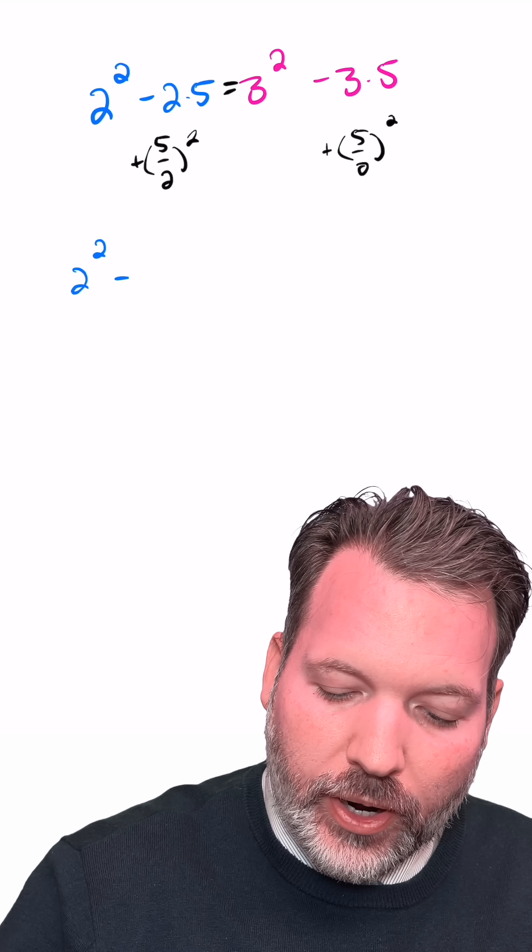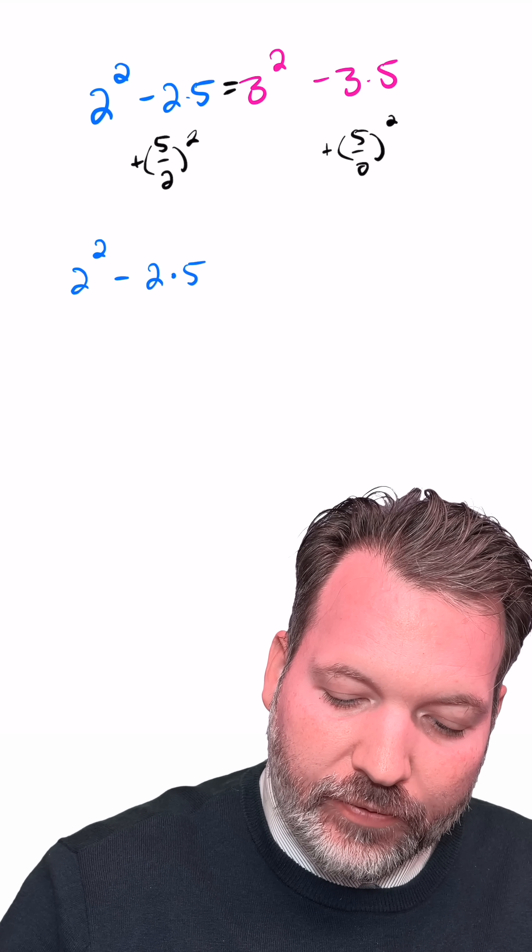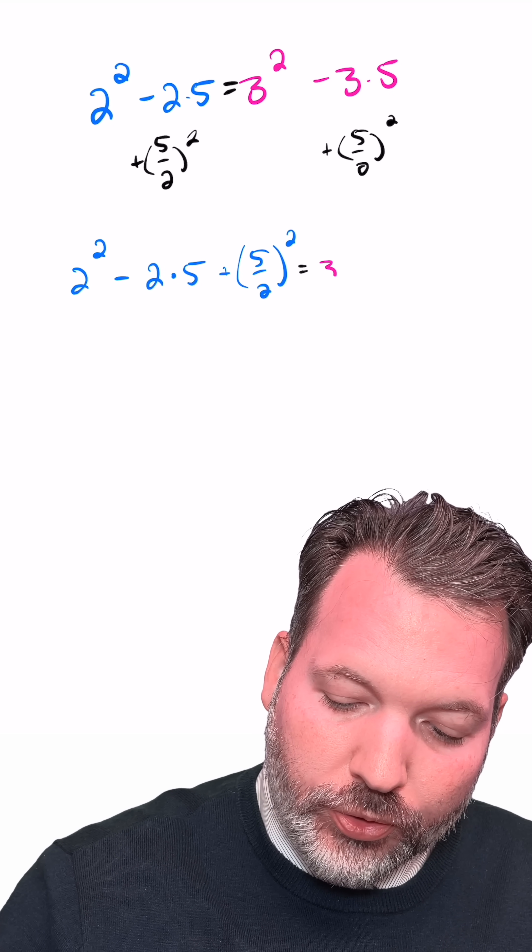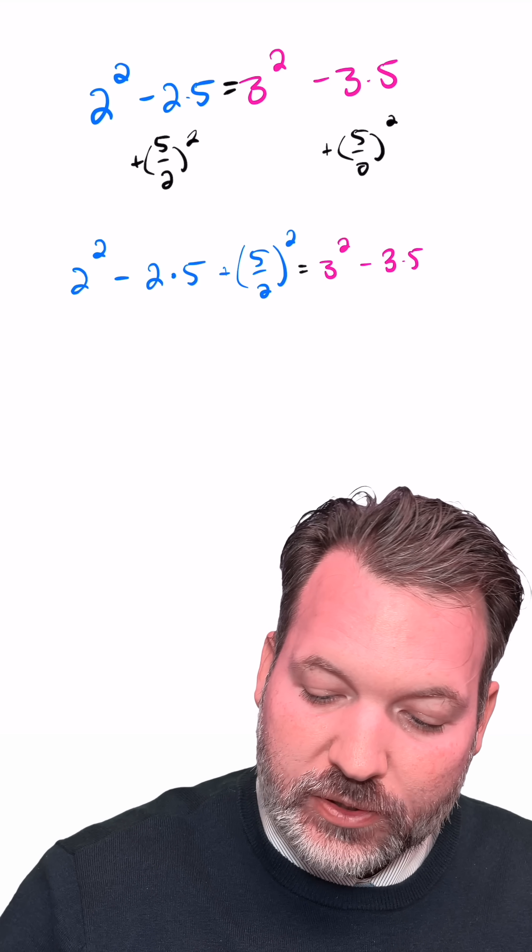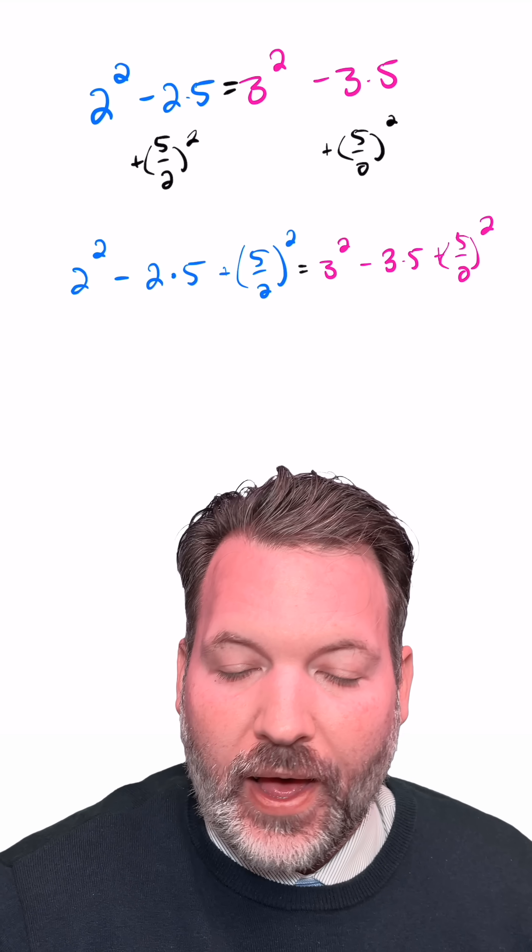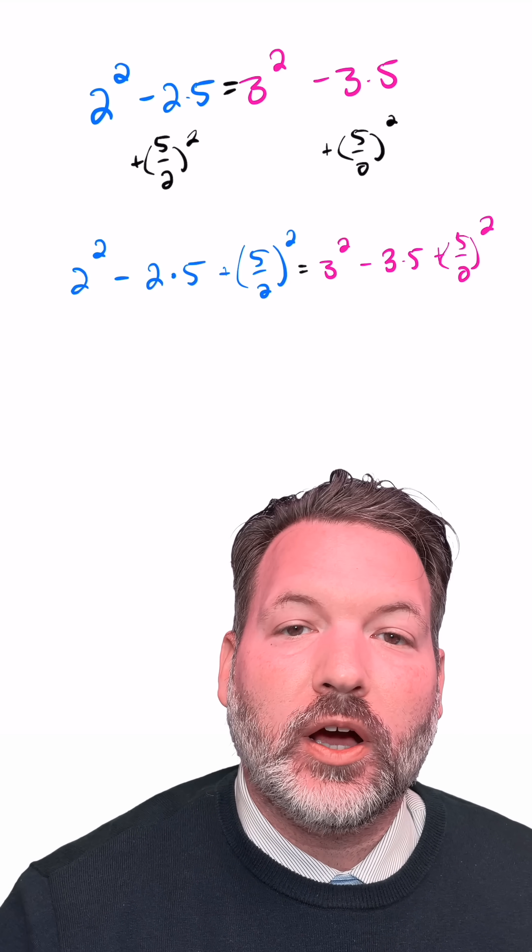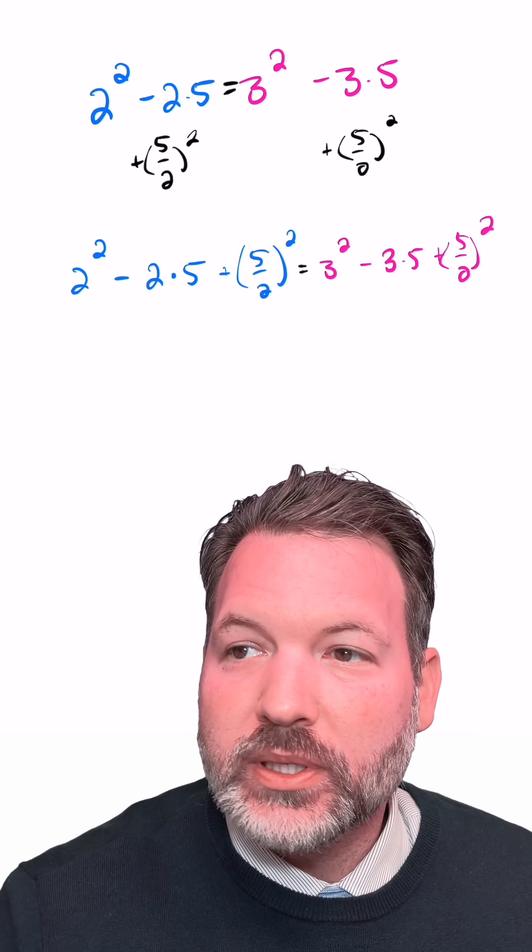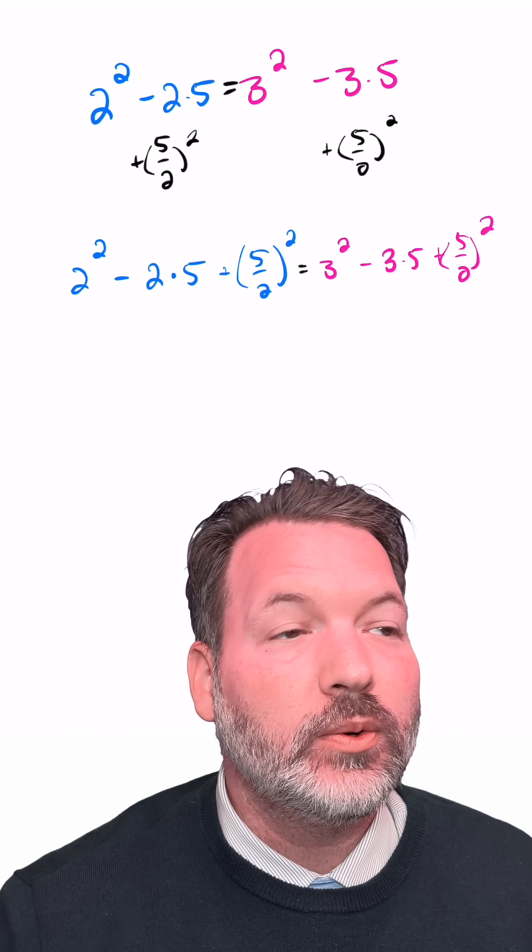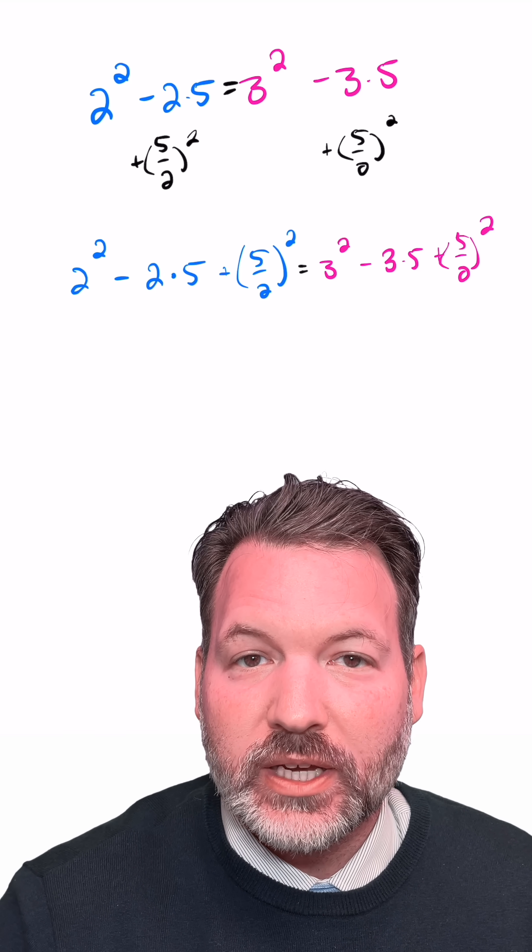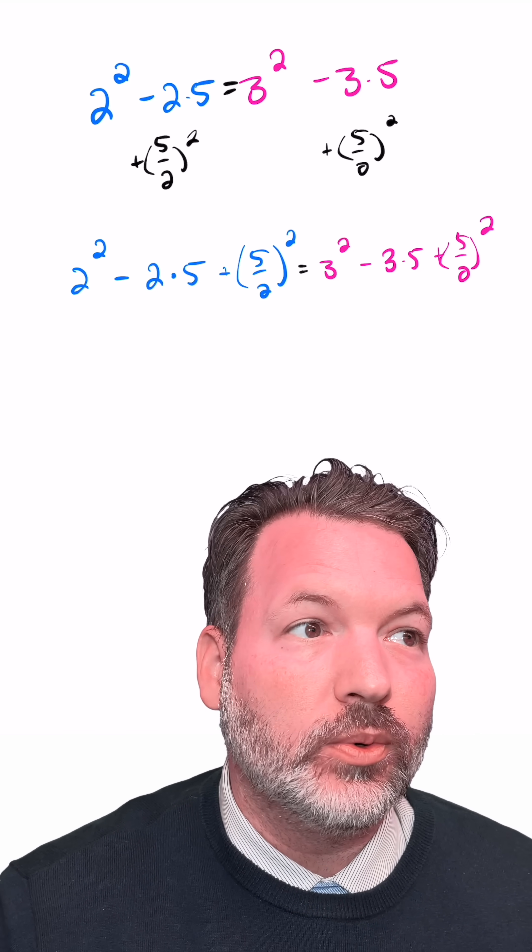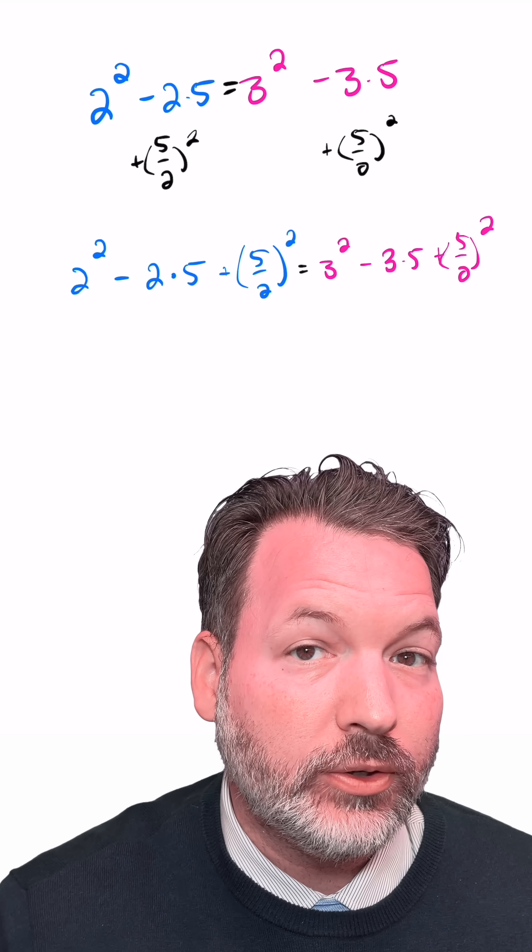What that gives us is 2 squared minus 2 times 5 plus 5 halves squared equals 3 squared minus 3 times 5 plus 5 halves squared. And again, at this point, if you evaluated everything out, if you typed everything on each side of this equal sign into a calculator, we would still be looking at a proper equation. The two sides would equal each other. They wouldn't be negative 6 equals negative 6 anymore. Instead, it would actually say 0.25 equals 0.25, but still true, right?